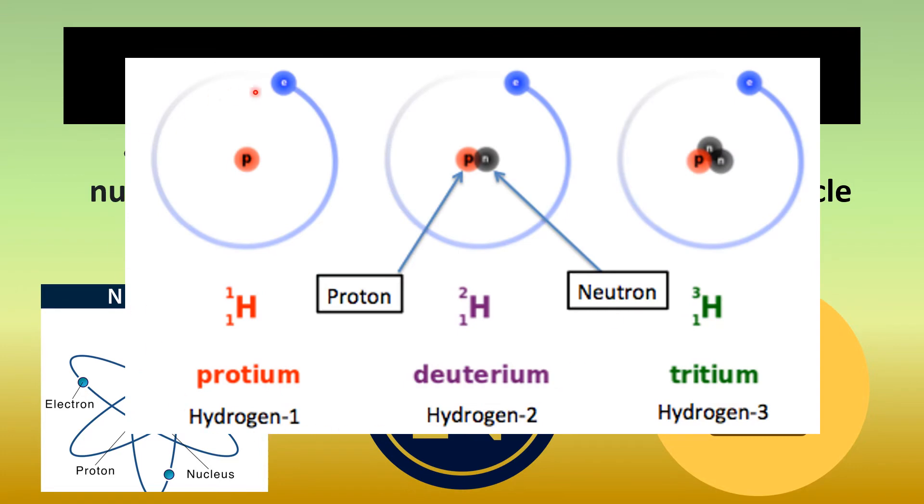Now, even in hydrogen atoms, only the protium isotope doesn't have any neutrons. Other isotopes like deuterium and tritium do have neutrons in their nucleus.